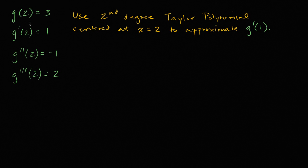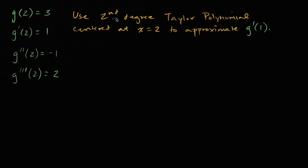We've been given information about the function g and its derivatives evaluated at x equals two. We know g of two is equal to three, g prime of two is equal to one, the second derivative of g evaluated at two is negative one, and the third derivative of g evaluated at two is two. Given that, we want to use the second degree Taylor polynomial centered at x equals two to approximate g prime of one — not g of one, g prime of one.